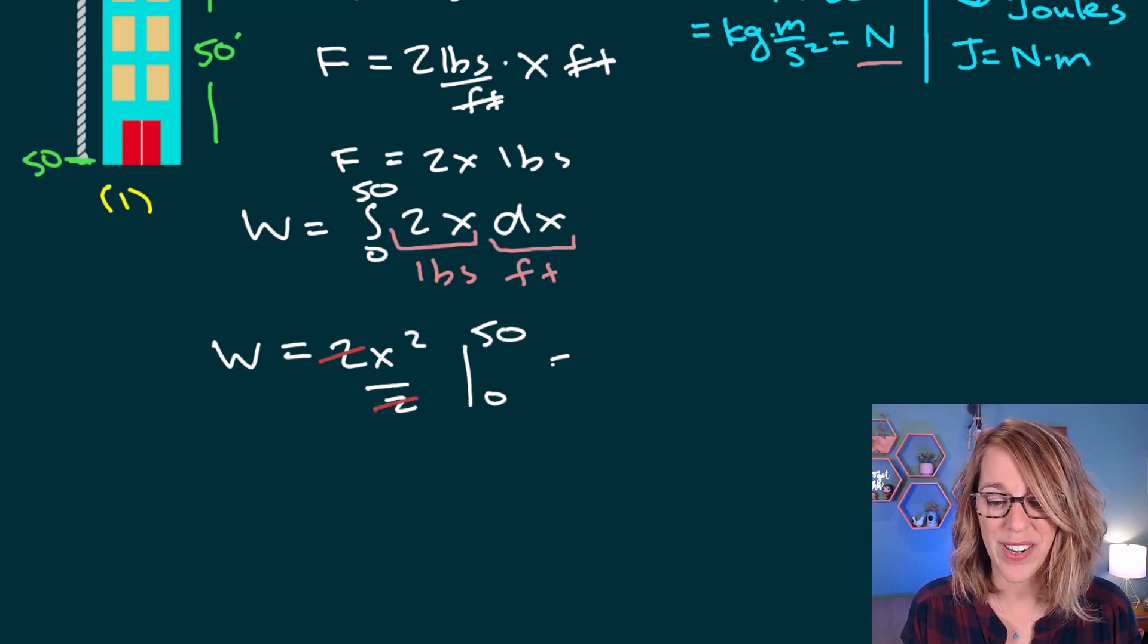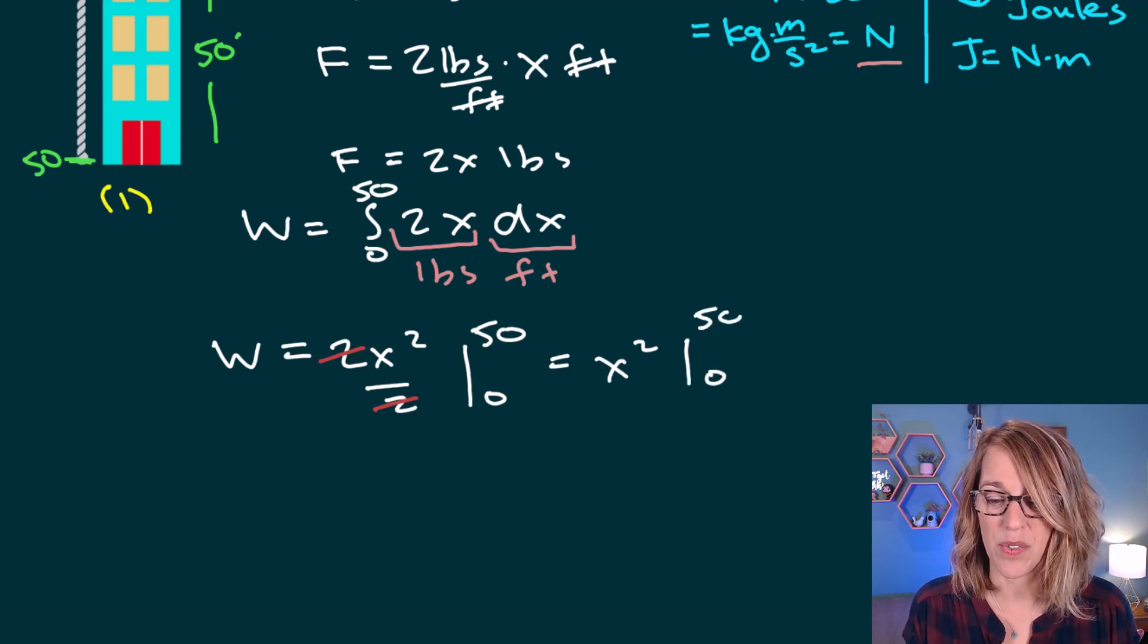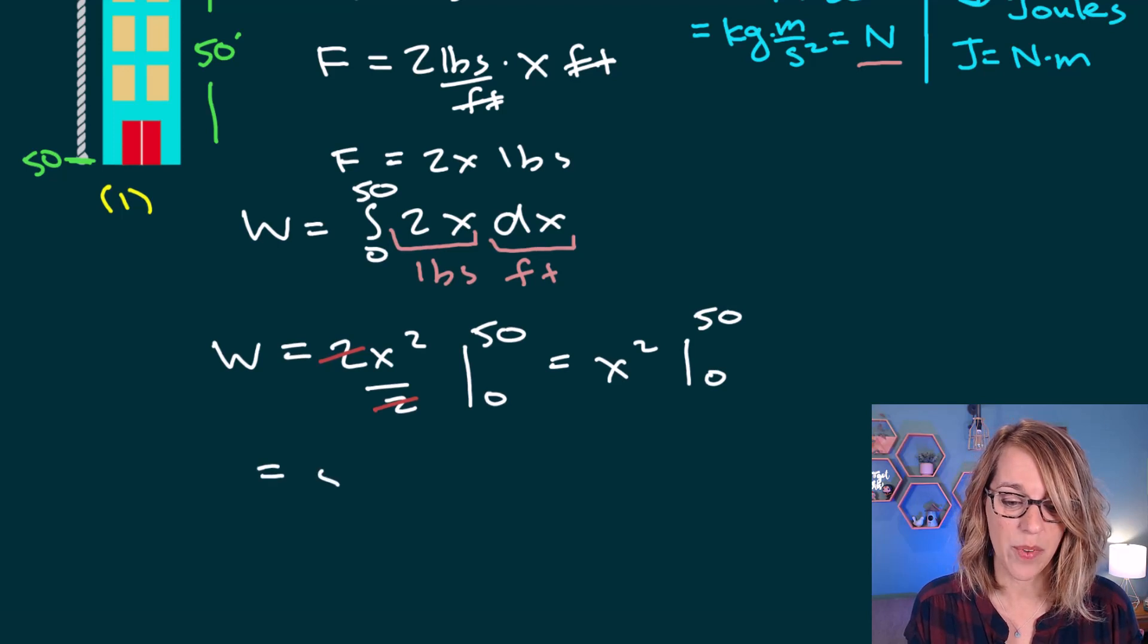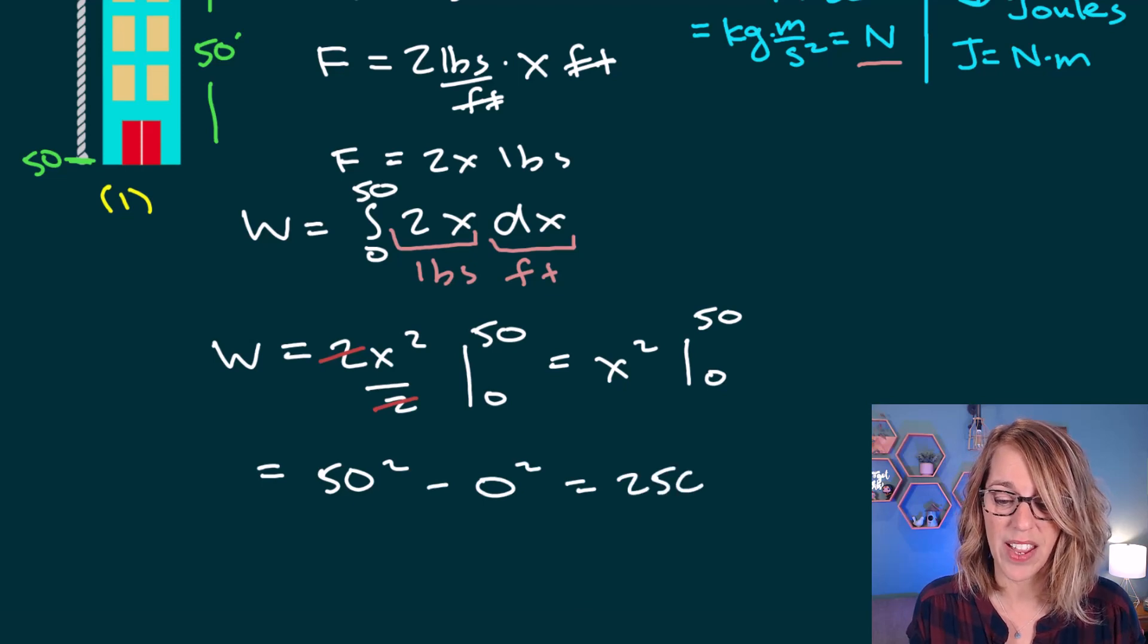So what I really want to do is to take that super nice anti-derivative of x squared evaluated from 0 to 50. We end up with 50 squared minus 0 squared, and that gives me 2,500.